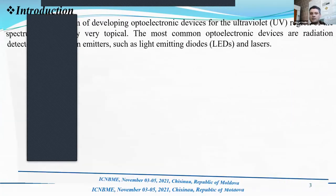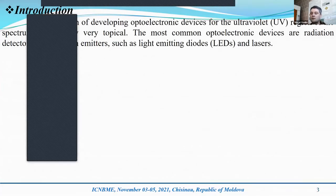The problem of developing optoelectronic devices for the ultraviolet region of the spectrum is currently very topical. The most common optoelectronic devices are radiation detectors and radiation emitters such as light emitting diodes and lasers.